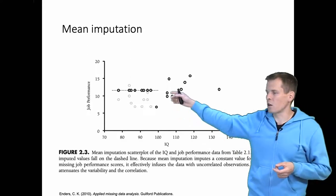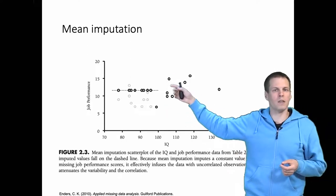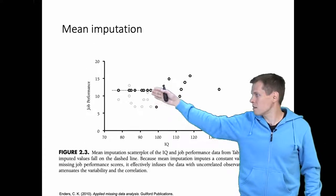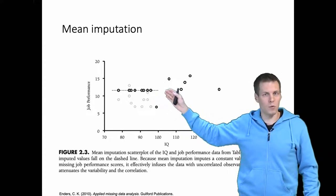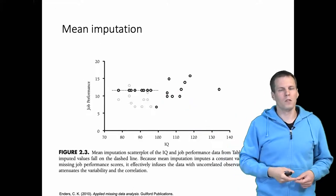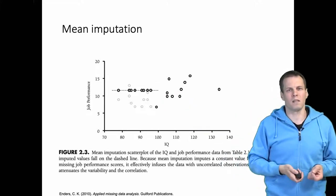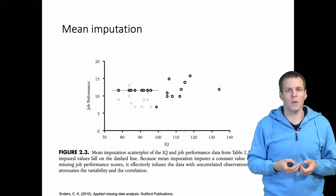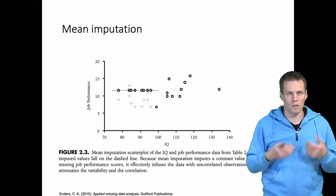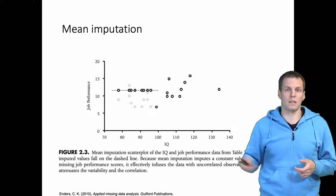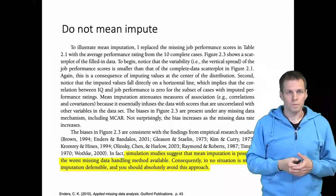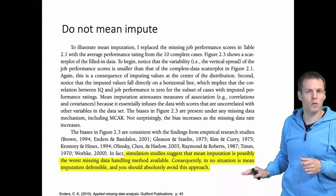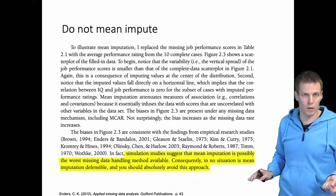The variation of job performance will also be greatly underestimated, because the imputed values are all the same — the variance of the imputed values is zero. This is a really bad idea, but it is very common because it's easy to apply and some entry-level quantitative analysis books recommend it as the default technique. Don't mean impute — this is probably the worst thing you can do when dealing with missing data.